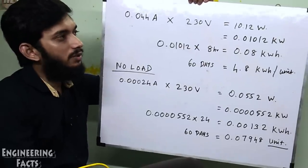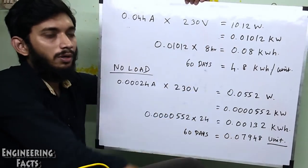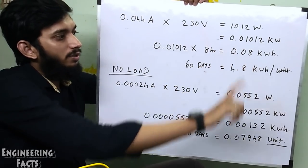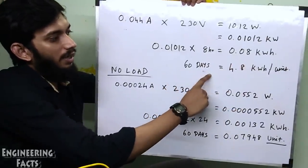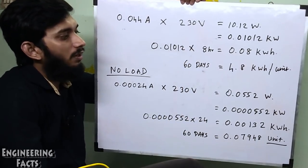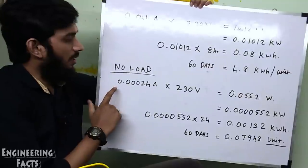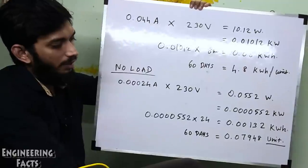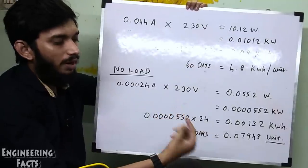So, if we are using the current value, we need to calculate the unit. First, we need to connect the mobile. We use the charger for 10 watts, so the input is equal to 10 watts. According to the KWH reading, the current value is 0.08 unit, and the current value is 4.8 unit. The current value is 0.09 unit.